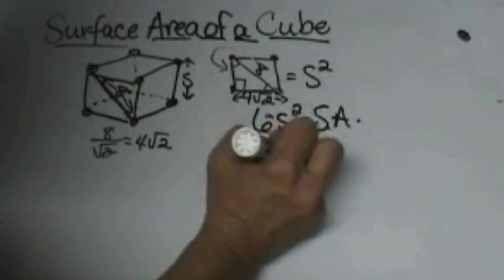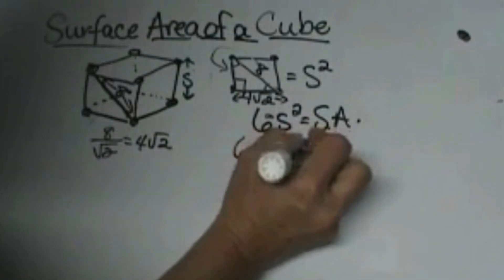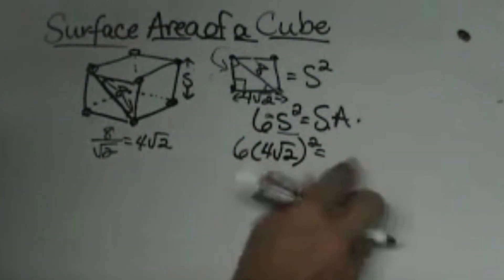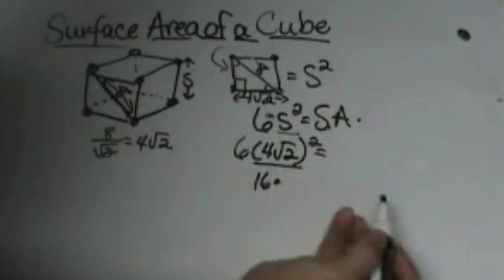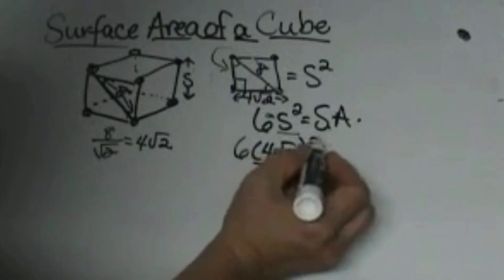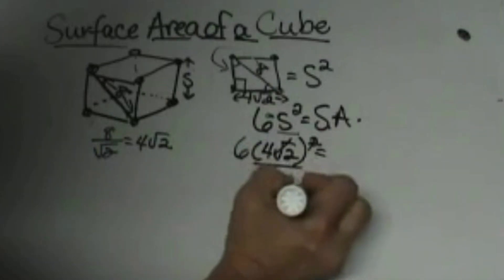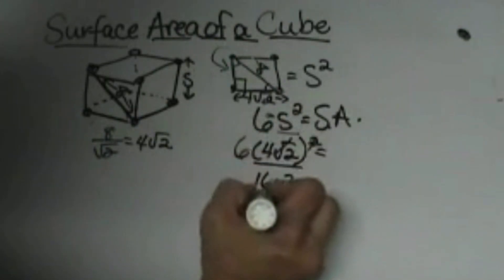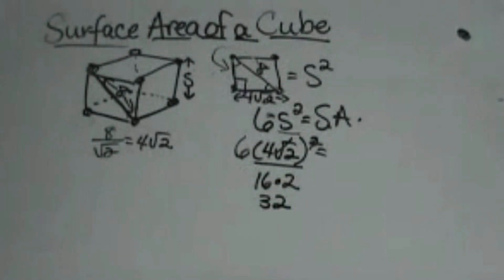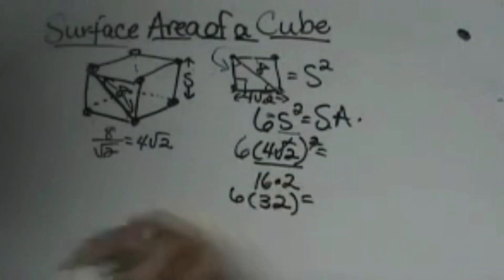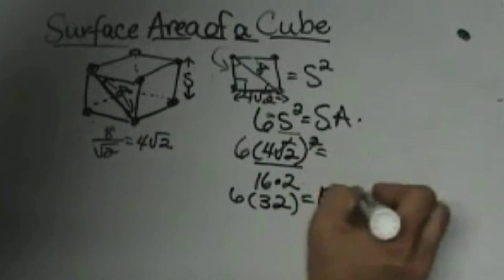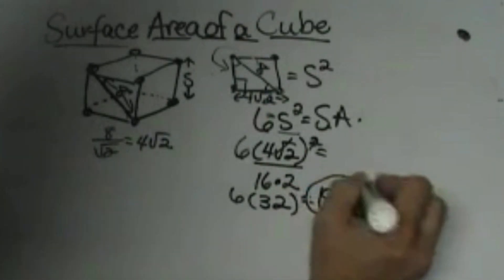So we are going to take 6 times 4 square root of 2, quantity squared, to find the surface area. We have to square the 4 square root of 2 first. So 4 squared is 16 and the square root of 2 squared is just 2. So the side squared is going to be 32 because 16 times 2 is 32. That gives us the area of 1 face, but we need to know the area of all 6 faces. So I'm going to take 6 times 32 and I get 192 square units — that would be my surface area.